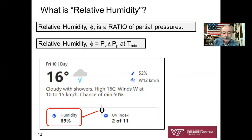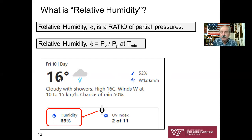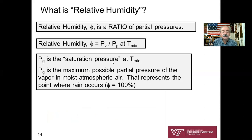Relative humidity is defined as the ratio of the partial pressure of the vapor divided by P-sub-G, the saturation pressure of H₂O at the temperature of the mixture. P-sub-G is looked up in the temperature table of your steam tables. As P-V approaches P-G, relative humidity approaches 100% — that's where rain occurs.